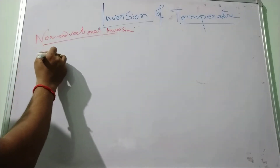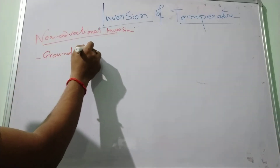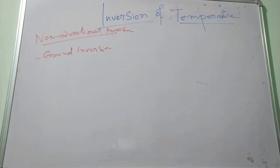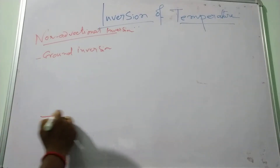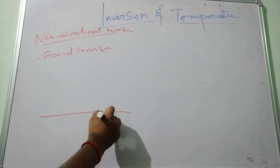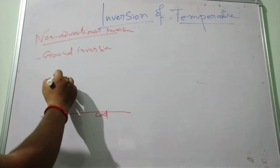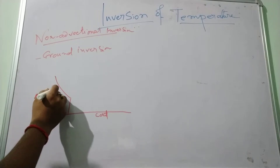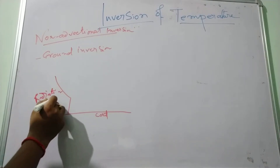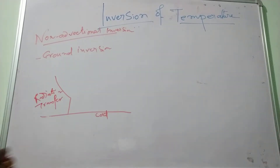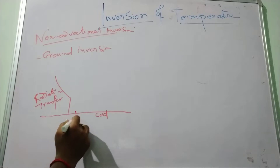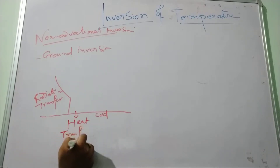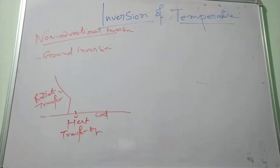Ground inversion is caused when the air is cooled by contact with the cooler surface. Heat is transferred from the air to the cold surface through radiation and conduction, especially at night time.